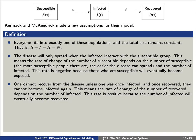Next, one cannot recover from the disease unless one was once infected and hence recovered. Similarly, once one is recovered from the disease, we're assuming that they cannot become infected again. This means that the rate of change of the number of recovered depends on the number that are currently infected. This rate is positive because the number of infected will eventually become recovered.